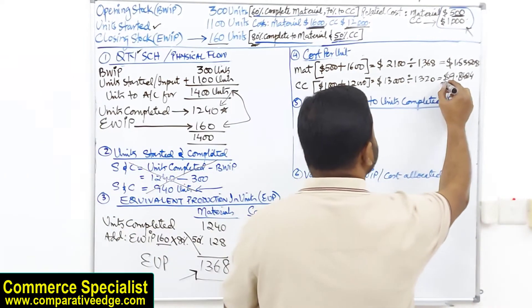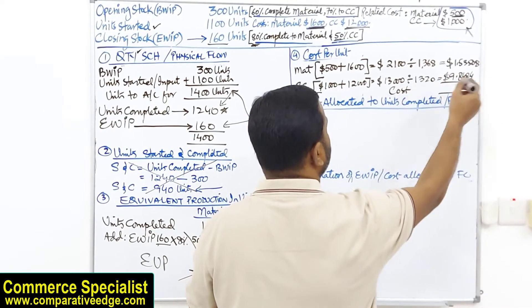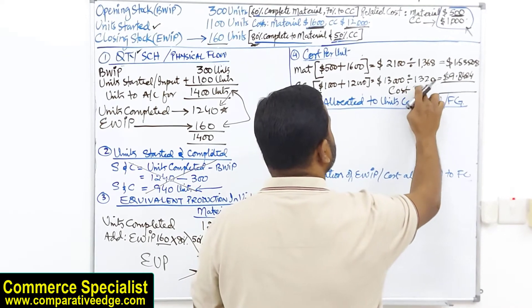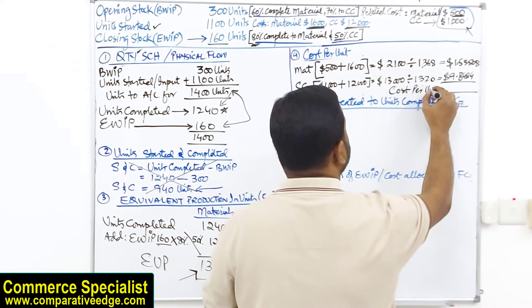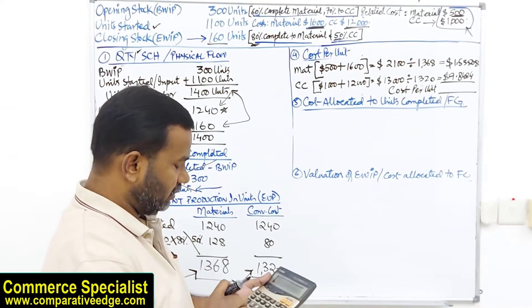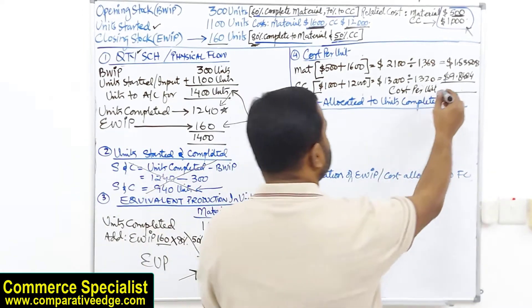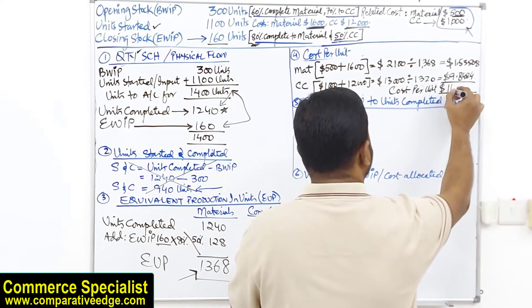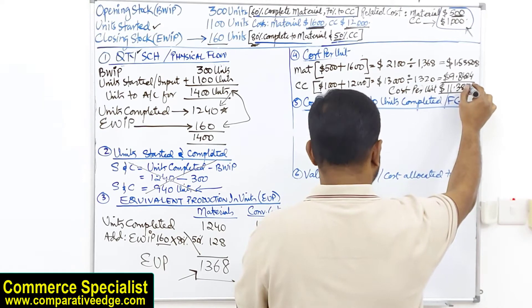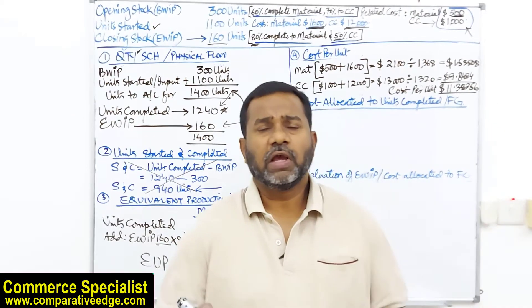Adding both costs together — conversion cost means labor and overhead — we get a total cost per unit of $1.53508 + $9.84848 = approximately $11.3836.